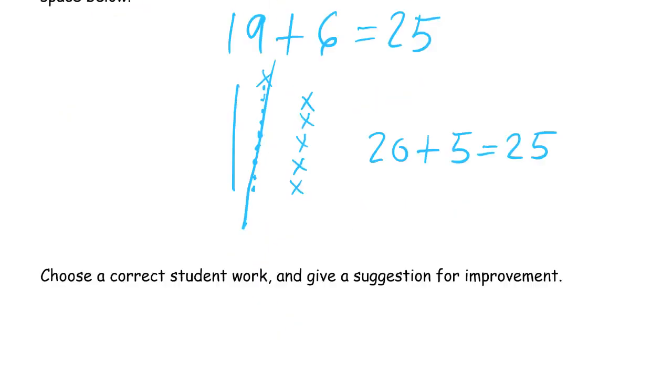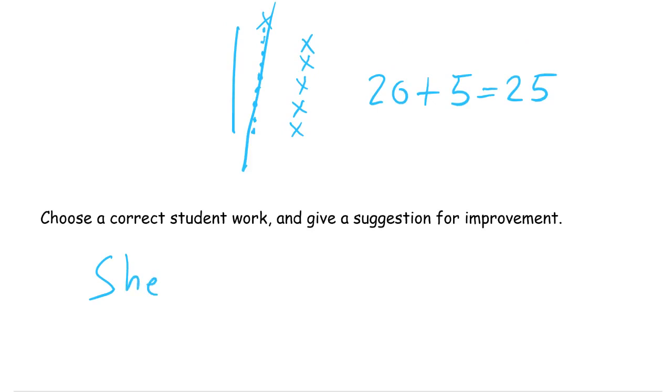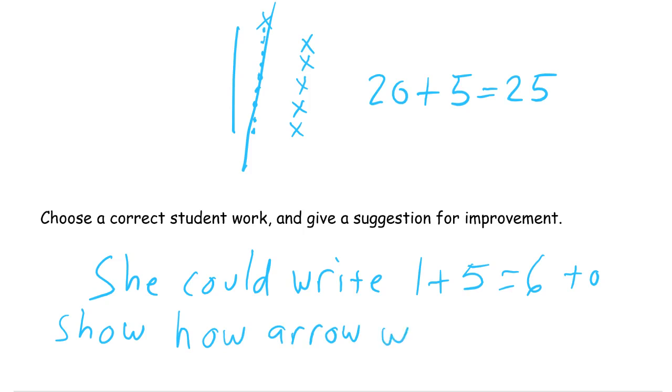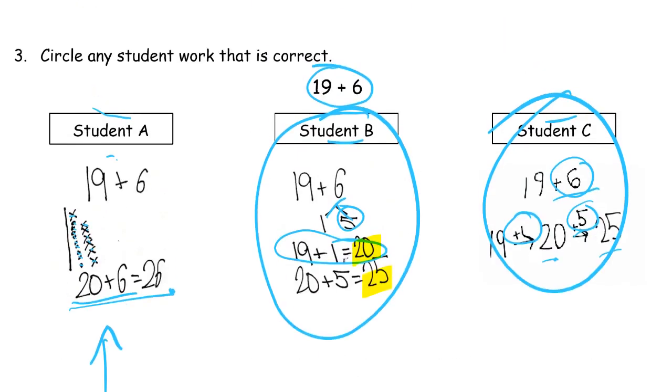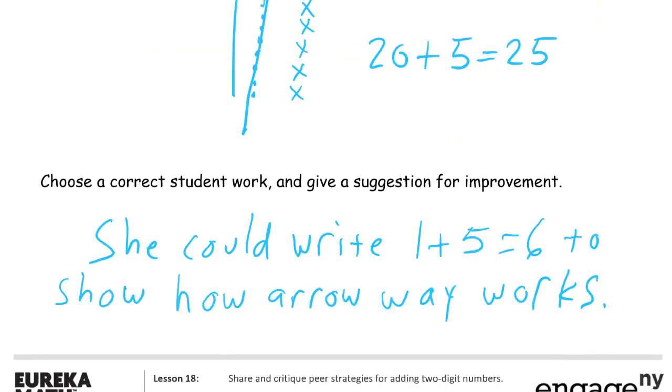Writing down something that you might check in your head is another way to add to something. I could just write it down, but I'm going to write a sentence here: She could write 1 plus 5 equals 6 to show where the arrow way works. Now maybe you noticed something else or there's a different thing that you wanted to add or change. Go ahead, write it down. This is not the only right answer to this question. There's lots of other ways to answer it. It's just the first one that I thought of.